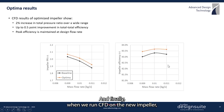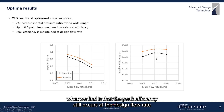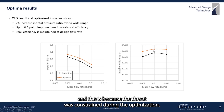When we run CFD on the new impeller, we find that the peak efficiency still occurs at the design flow rate, and this is because the throat was constrained during the optimization.